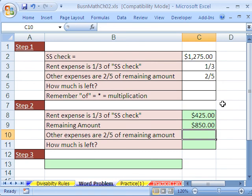Now let's think about this, the whole confusing part of this problem is it says other expenses are two-fifths of the remaining amount. If it said two-fifths of the original check, then it would just be that times that, but it's not, the remaining amount. So we have a calculation to do to get this 850 before we can even deal with the other expenses.